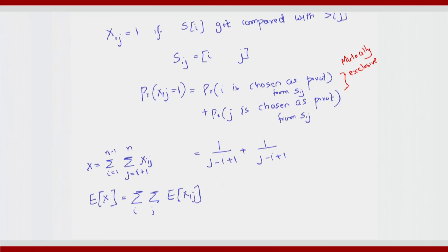What is the expected value of x_{ij}? It is basically 1 times the probability of x_{ij} being 1, plus 0 times the probability of it being 0, which is not of interest. So the expected value will basically be 2 divided by (j-i+1).